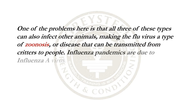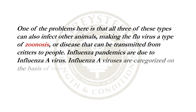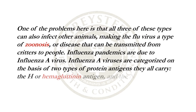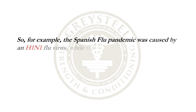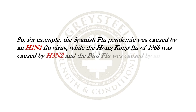Influenza pandemics are due to influenza A virus. Influenza A viruses are categorized on the basis of two types of protein antigens they carry: the H, or hemagglutinin antigen, and the N, or neuraminidase antigen. For example, the Spanish flu pandemic was caused by an H1N1 flu virus, while the Hong Kong flu of 1968 was caused by H3N2, and the bird flu was caused by an H5N1 variant. These serotypes can be important clues to the virulence of a particular flu strain, and rapid tests are now available to help doctors make better decisions about treatment and prognosis.